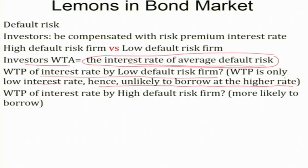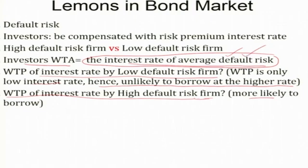For low default risk firms, the average interest rate — the expected average default risk rate — is higher than their willingness to pay. So they think they should be getting capital from the bond market at a low interest rate, meaning they will back out from the market. As for the willingness to pay of high default risk firms — they are already aware of their default risk. The project activities they are undertaking are not in a better condition. So they will be happy to pay the average default risk interest rate, because actually they would have to pay a high interest rate but they get it at the average rate.